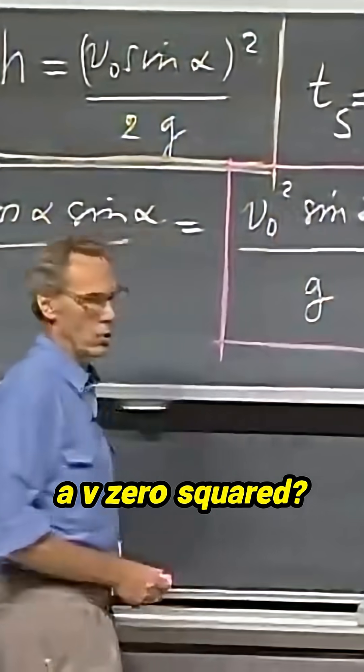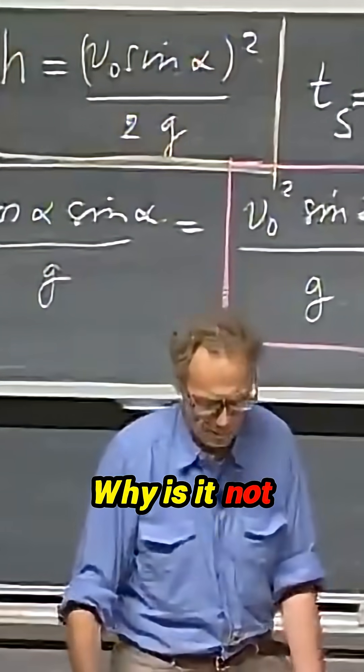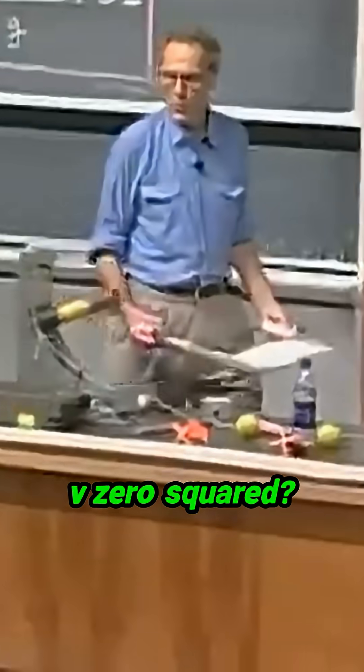Why does it also have a v zero squared? There must be a way that you can reason that. Why is it not just v zero? Why is it v zero squared?